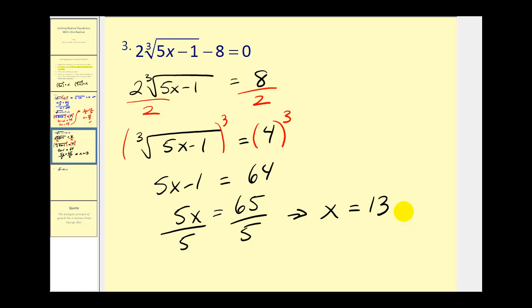And we can go ahead and check this as well. Two times the square root of five times 13 would be 65 minus one, that would be 64 minus eight equals zero, and again this is the cube root. So the cube root of 64 would be four, so two times four is eight, minus eight is zero, checks.